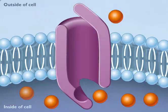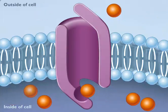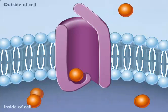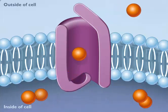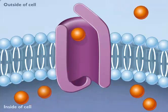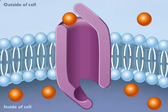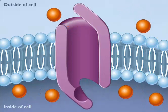Facilitated diffusion can occur in either direction depending on the concentration gradient. If there is a higher concentration of the particular molecule inside the cell, the same carrier protein would then transport the molecules out of the cell.